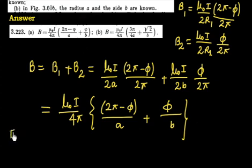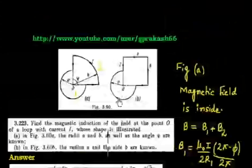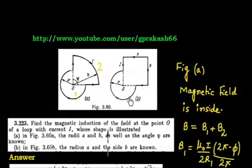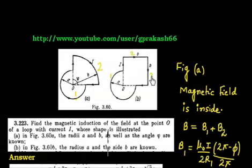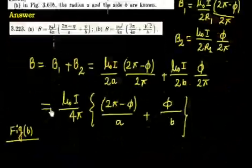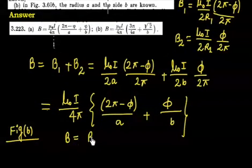Now let us discuss figure B. The straight wire portions through O again contribute zero. We have three parts: the curved arc (section 1), and two straight finite wire segments (sections 2 and 3). The current is clockwise throughout, so all contributions give an inward magnetic field. Total B = B1 + B2 + B3.